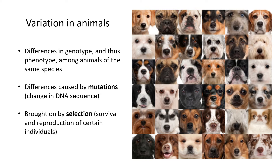The third point is that variation is usually brought on by selection. Humans select individuals, or it can be natural selection — meaning environmental factors such as floods, droughts, or anything in the environment can also select which individuals survive and which die. This comes down to the survival and reproduction of certain individuals, and the genes of those that survived can be passed on to offspring, allowing those genes to survive within a species.